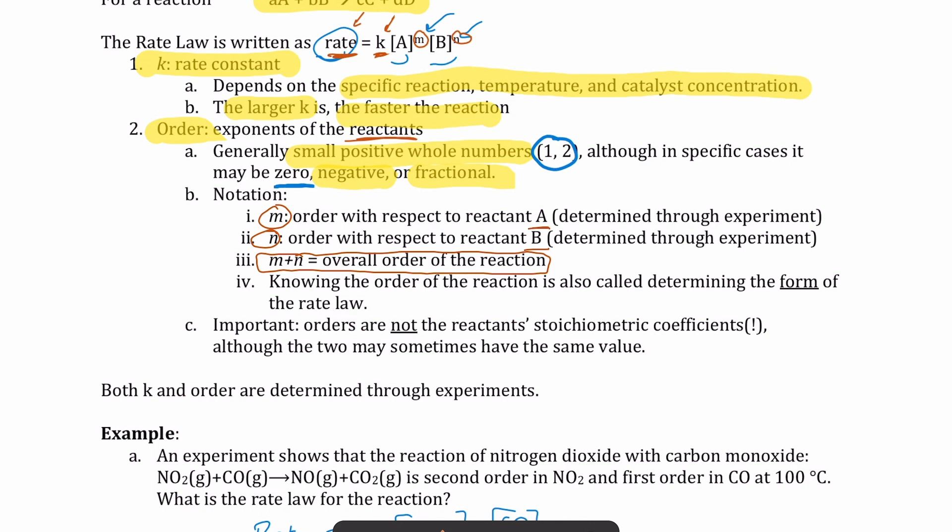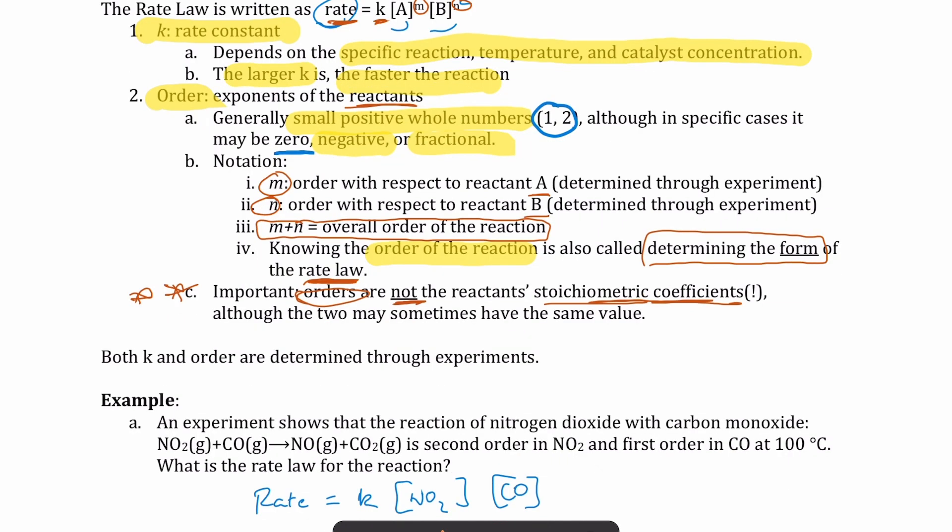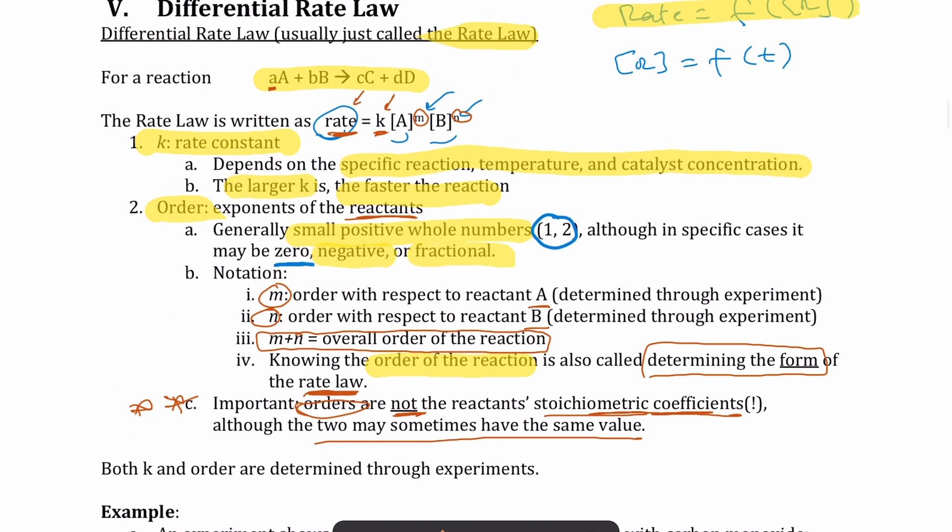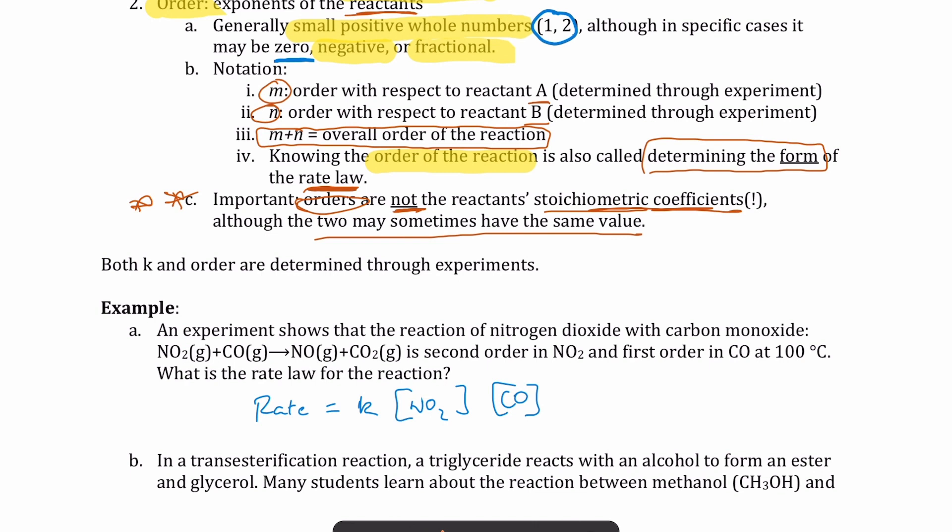When a question asks you to determine the form of the rate law, what they are asking you to do is to determine the order of the reaction. They want to figure out what is the value of each of these orders. Now here's the part that's super important, because these orders are not the reactant's coefficient. So the order and the coefficient are two separate things. They might happen to have the same values. So for example, let's say the coefficient is one, and then for one of the reactants, and then the order is also one. That's just by coincidence. So you will see later on that there is a special type of reaction where the order and the coefficient are exactly the same number. But that's not the case in a general reaction.